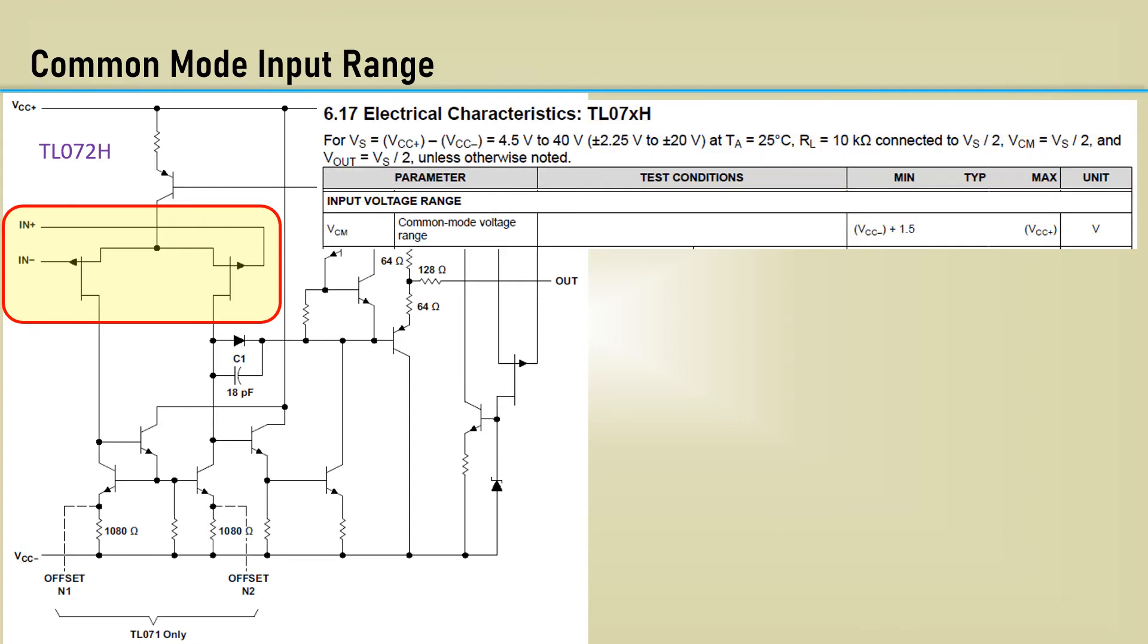This allows the common mode input voltage range to include the positive power rail, but not the negative rail. Wouldn't it be great if we had the best of both worlds?